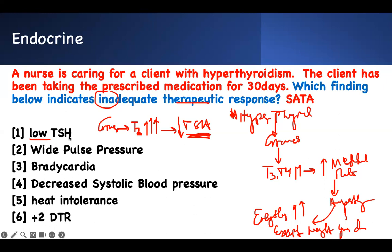I'm slowing down to explain how to answer questions — it has to make sense. With Grave's disease, your T3 is high, your TSH should be low. If I see TSH is low, you still have Grave's disease — inadequate therapeutic response. I need to give you more medication to bring your T3 down and normalize your TSH. It's just endocrine — straightforward.